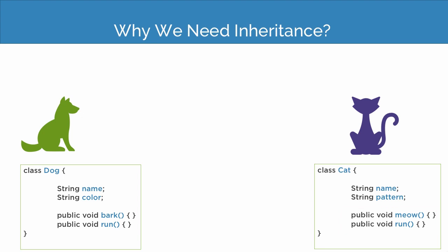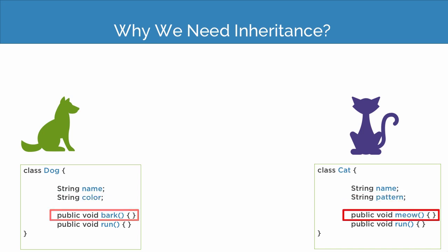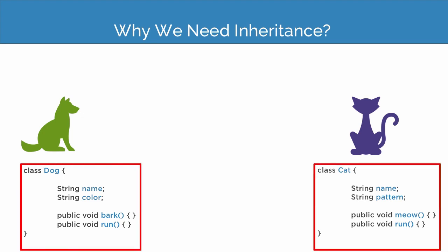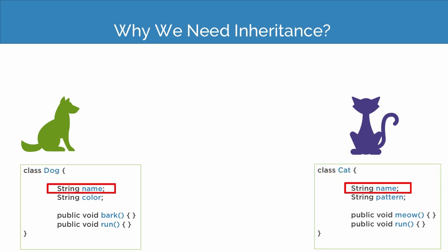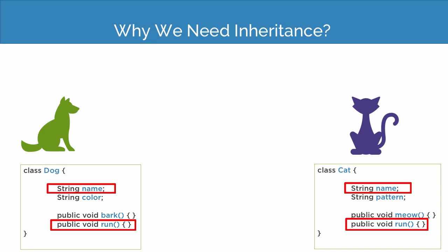Now in both the classes of dog and cat we have some differences — in the case of dog we have color and in the case of cat we have some colored patterns. Also a dog barks and a cat meows. But if you notice, in both the classes of dog and cat we have a few properties and behaviors in common, such as a dog has a name and also the cat has a name. The dog can run and also the cat. So in both cases we have some code repetition. Now a good programmer always tries to minimize code by reducing code redundancy.